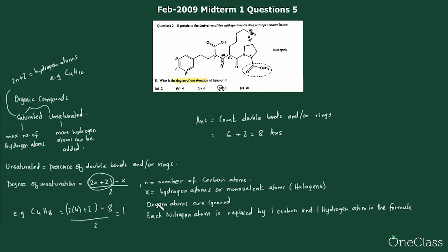Similarly, for using this formula, whenever we encounter oxygen atoms, we ignore the oxygen atoms in this formula, but whenever we see nitrogen atoms and there are 3 nitrogens in this molecule, we replace each nitrogen by 1 carbon and 1 hydrogen in the formula. So the answer is D, and degrees of unsaturation is 8.